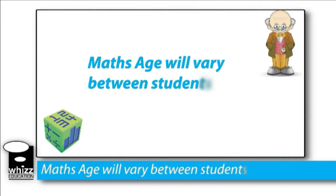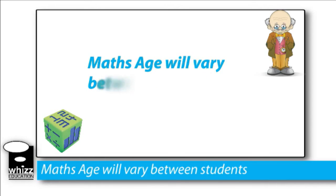More confident students may find their maths age is ahead of their actual age, whereas less confident students may find their maths age is lower than their actual age. So you could have a 9 year old who's doing maths at the ability of a typical 7 year old, and vice versa.